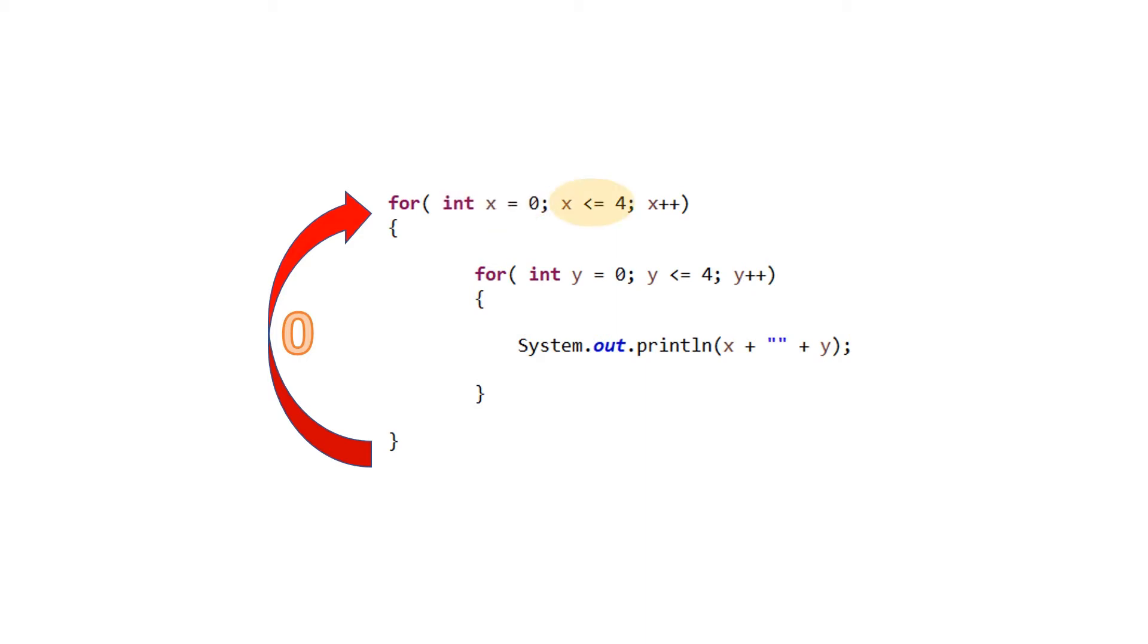The next part of the for statement is the constraint. In this example, we are told that the outer loop will continue to repeat so long as the value of x remains less than or equal to 4. The next part of this statement is called the iterator. This code tells us that the value of x will increase by 1 each time the outer loop is completed.